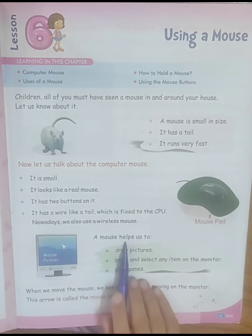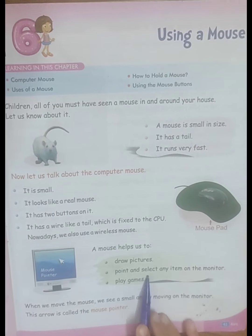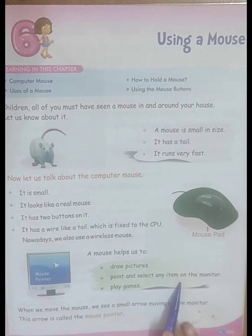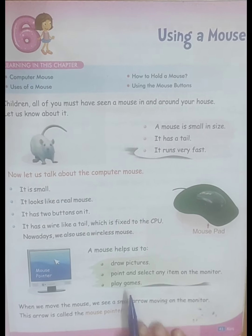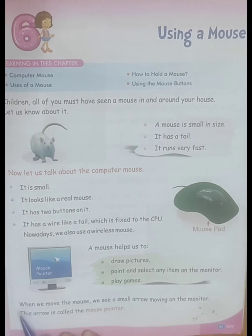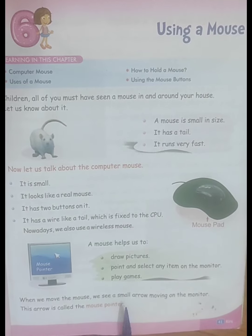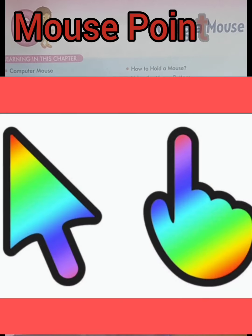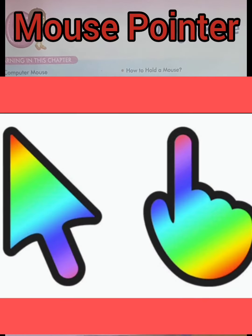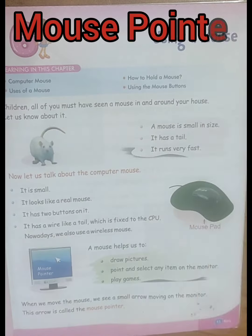A mouse helps us to draw pictures, point and start an item on the monitor, and play games. When we move the mouse, we see a small arrow moving on the monitor. This arrow is called the mouse pointer.